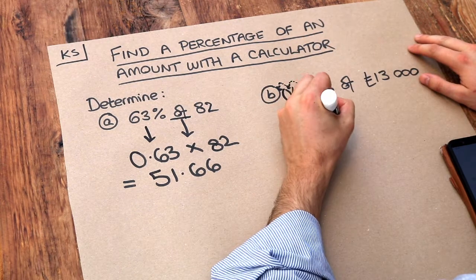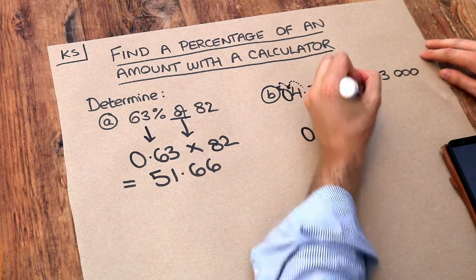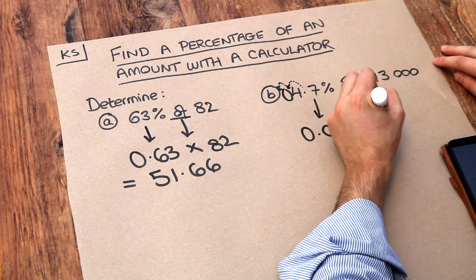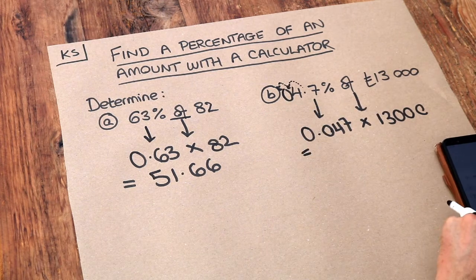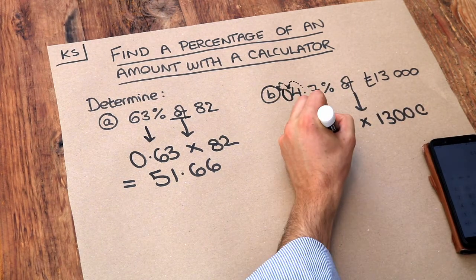So 0.047, the "of" we replace with times, and then we got 13,000. Again, shove that into our calculator and that gives us exactly 611.